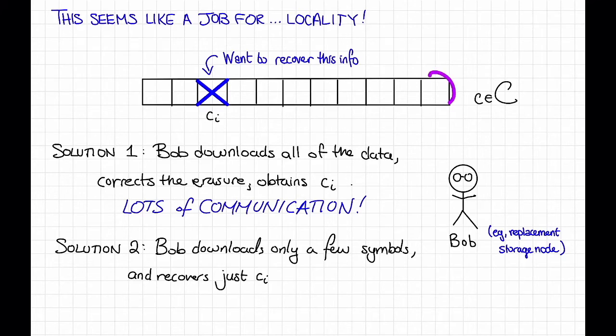That is, maybe Bob just queries this symbol and that symbol and that symbol or something, downloads that information, and hopefully, if we've designed the code correctly, Bob is able to recover c_i from this information. If he can do this, we say that the code exhibits locality in an informal sense.